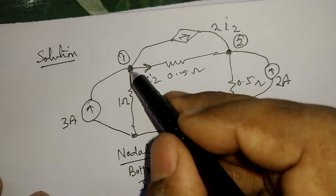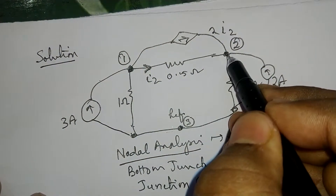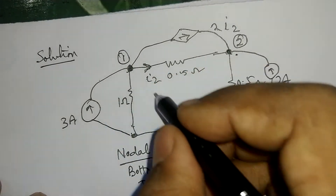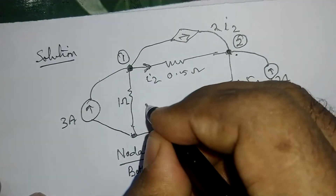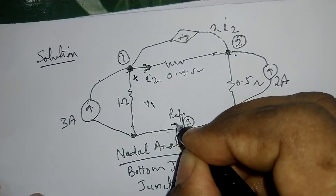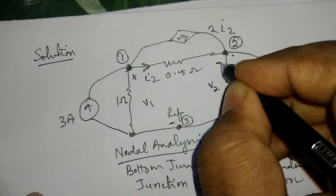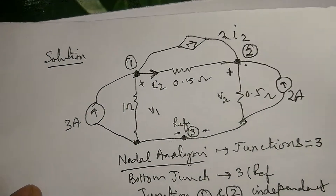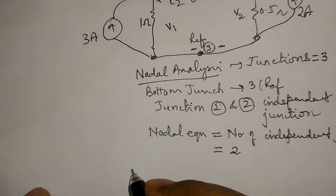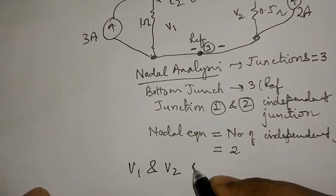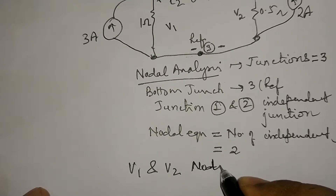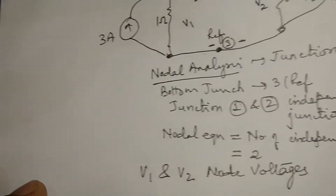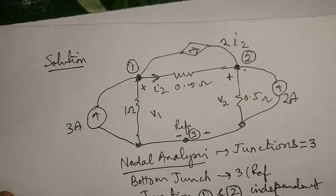In this circuit, the independent junctions are 1 and 2. After deciding this, we consider two node voltages: V1 between node 1 and reference, and V2 between node 2 and reference. Therefore, V1 and V2 are the node voltages. Since there are 2 node voltages, 2 equations should be written in terms of V1 and V2 at independent node number 1 and independent node number 2.